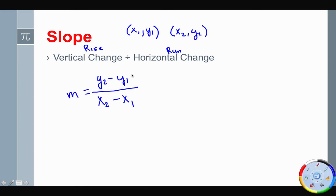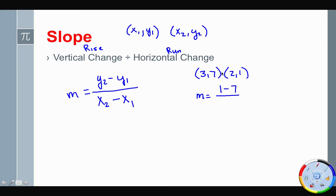So slope is m = (y2 − y1) / (x2 − x1). If I had the points (3, 7) and (2, 1) and wanted to find the slope, I would say m = (1 − 7) / (2 − 3). That gives us −6 divided by −1, which is positive 6. So my slope is 6 — going up 6 units and right 1 unit if we were to think about graphing.